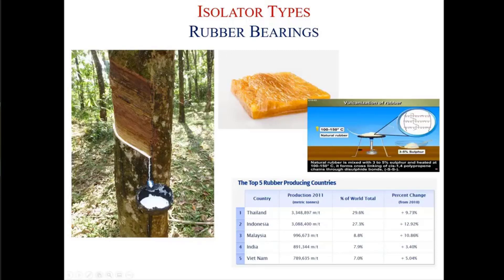The main compound is rubber, which is extracted from rubber trees. Every day they make a scratch on these trees and collect the rubber compound. Then, by applying some additional materials and with heat, they vulcanize this rubber to create what we use for seismic isolators, as well as other rubber compounds you see in daily life — for example, car tires or the soles of your shoes. All of them are composed from this rubber material.